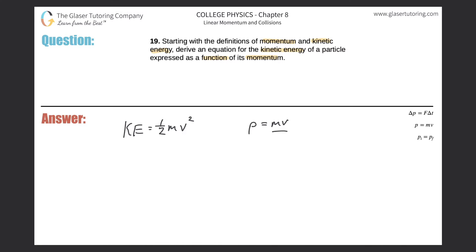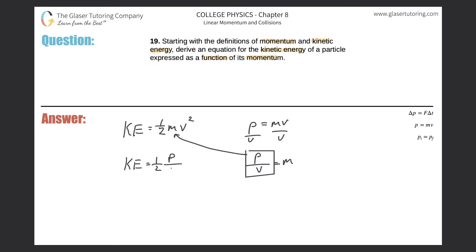So let's simply divide the velocity out, and we notice that momentum divided by velocity is equal to the mass of the object. Now I'm going to take this result and plug it in for mass in the kinetic energy equation. So kinetic energy is going to be equal to one-half multiplied by the momentum over the velocity, times the velocity squared. Notice that the velocity squared is really over one, so I have two velocities in the numerator divided by one velocity in the denominator.